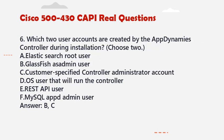Question 6: Which two user accounts are created by the AppDynamics controller during installation? Choose two. A. Elasticsearch route user. B. Glassfish admin user. C. Customer-specified controller administrator account. D. OS user that will run the controller. E. REST API user. F. MySQL appd admin user. Answer: B, C.